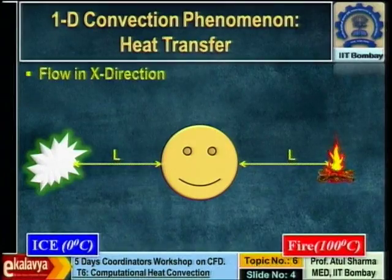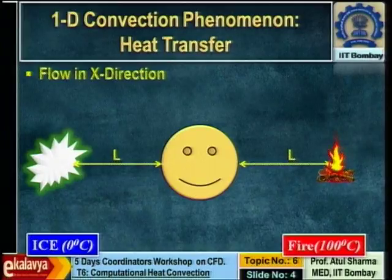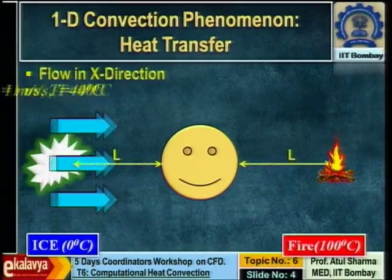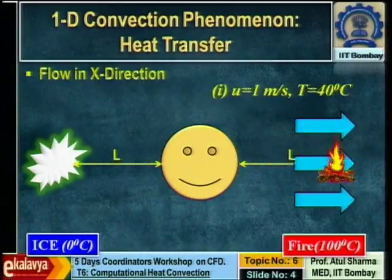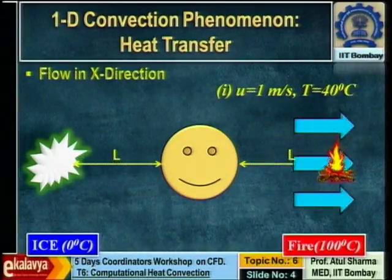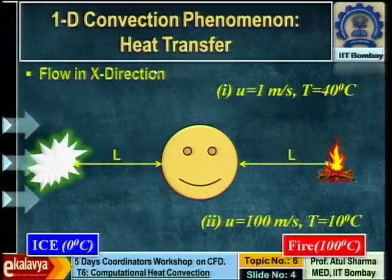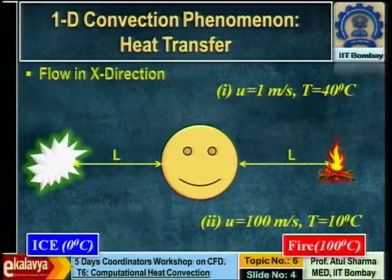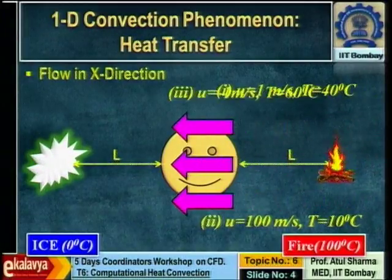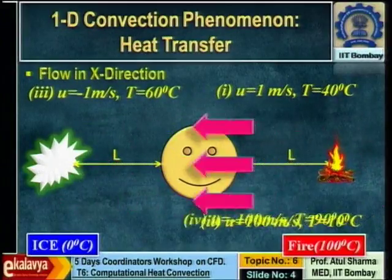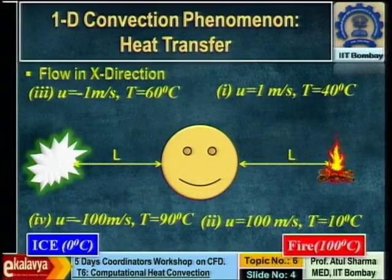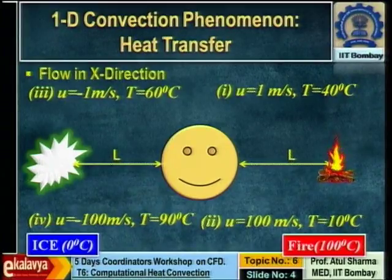Convection is a combination of diffusion phenomena — conduction and pure advection. If the flow is from the ice side at 1 meter per second, you feel a temperature of 40 degrees. At 100 meters per second, you feel 10 degrees. If it is from the fire side, you feel 60 degrees, and if the velocity increases, you feel 90 degrees. This is a combination of conduction and advection.